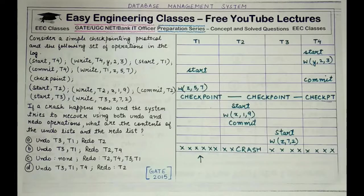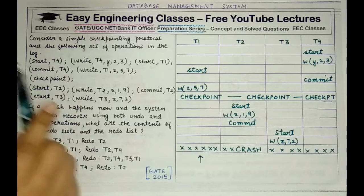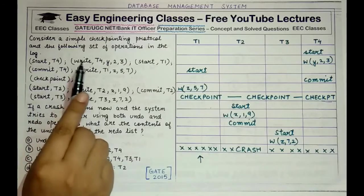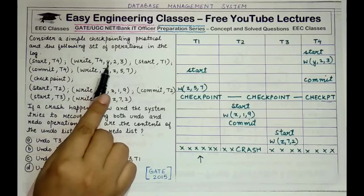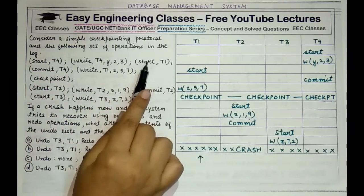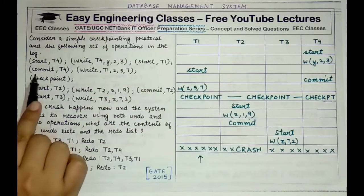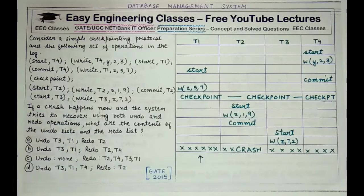The question says: consider a simple checkpointing protocol and the following set of operations in the log. The operations are: start T4, write T4 Y 23, start T1, commit T4, then write T1 Z 5 7, and then a checkpoint occurs.